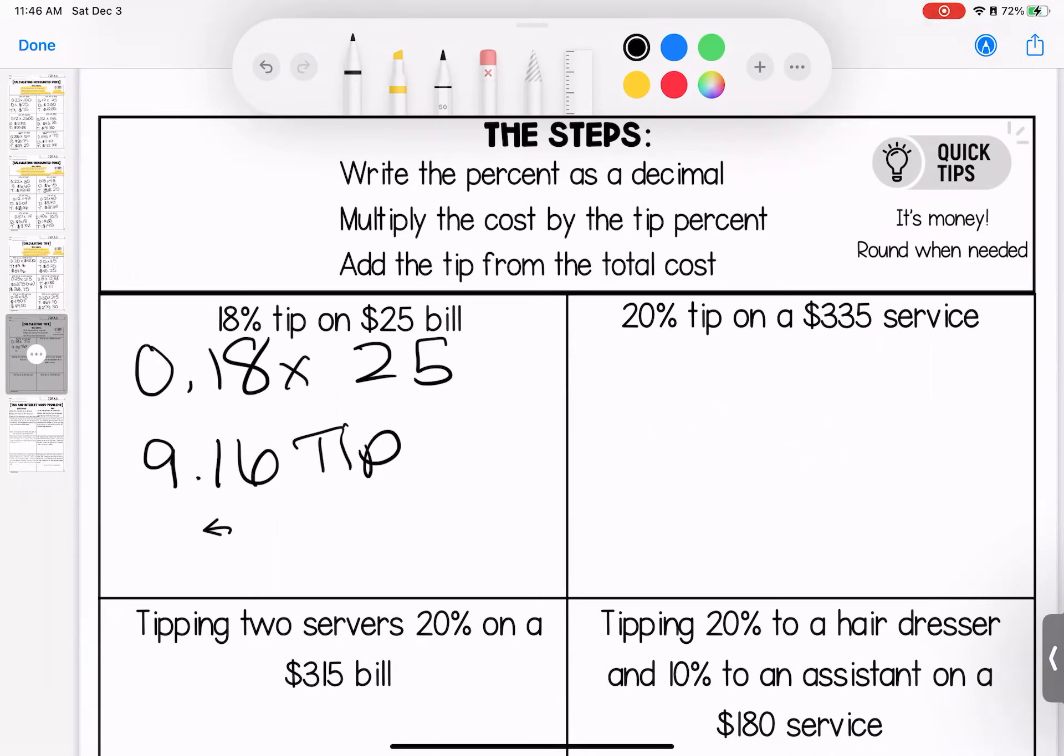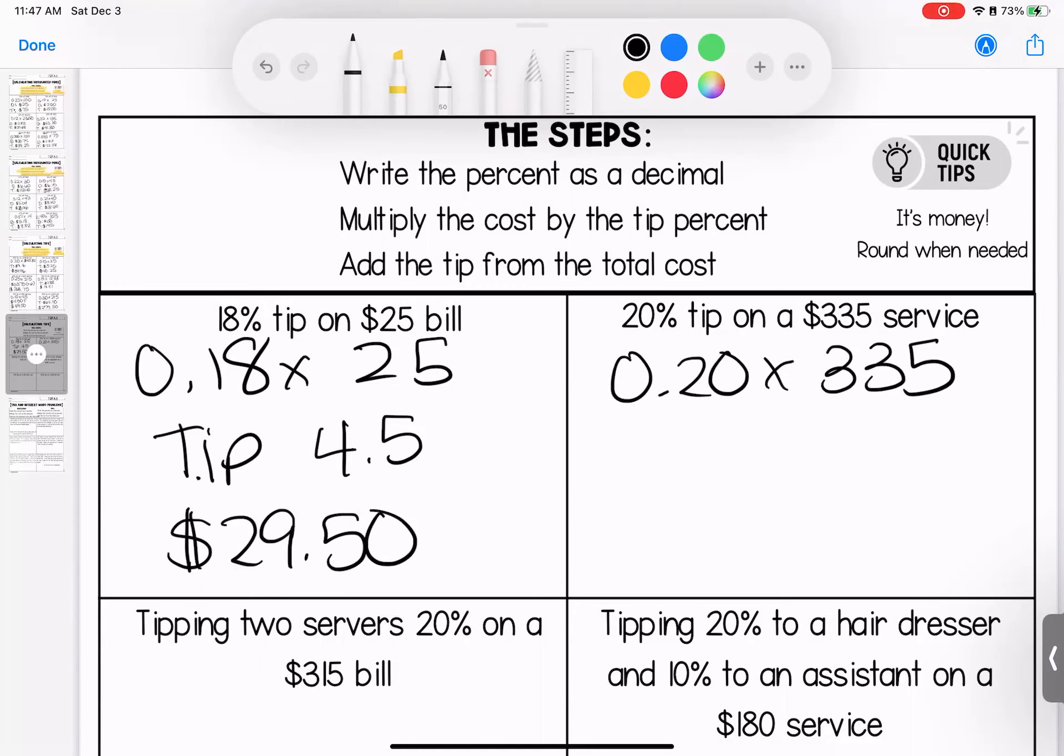30% tip on a $215 bill. The tip is going to be $64.50. My total spent is $279.50. Next page, still working on tips. 18% tip on a $25 bill. My tip would be $4.50. My total would be $29.50. A 20% tip on a $335 service. When we multiply these, our tip is $71. Our total is $406.